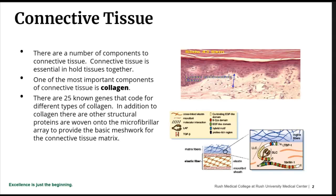Connective tissue has many different components and is essential in holding tissues together. I'm not going to go into a lot of detail to overlap what biochemistry and physiology covered. From my perspective, one of the most important components is collagen. There are 25 different genes that code for different types of collagen, and in addition to collagen, there are other structural proteins, all coded by different genes, that wind together in this microfibrillar array that is connective tissue.